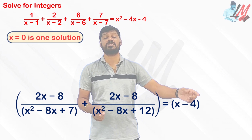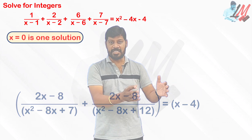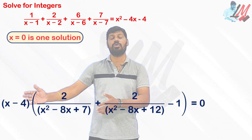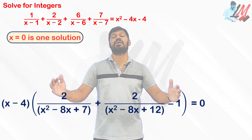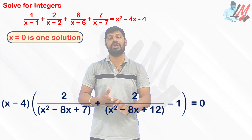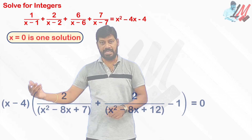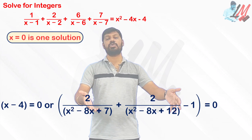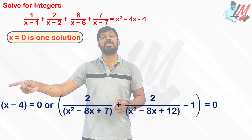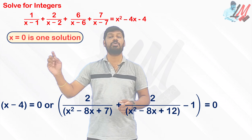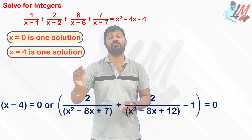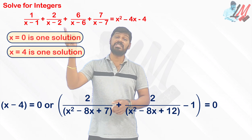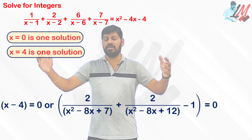We have an (x−4) factor on the right side. Transposing and factoring out (x−4) gives (x−4) times some bracket equal to zero. So either x−4 = 0, giving x = 4 as another integral solution, or that bracket equals zero.